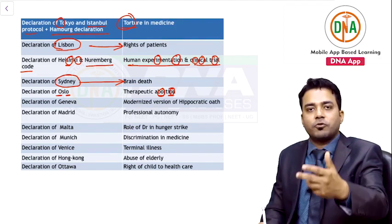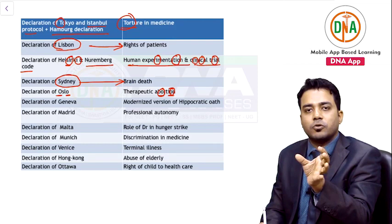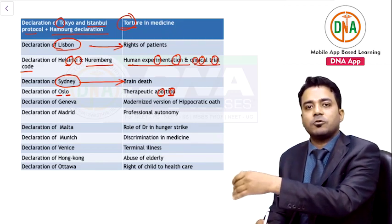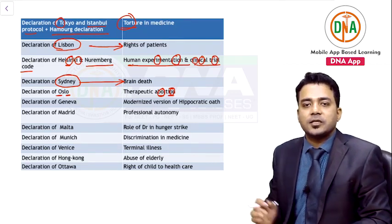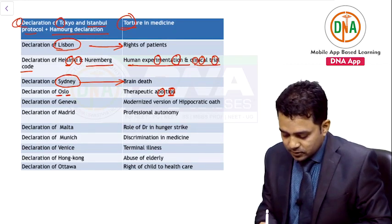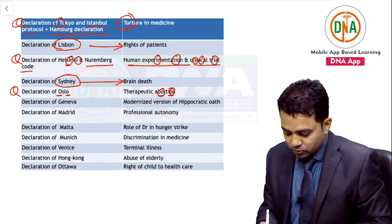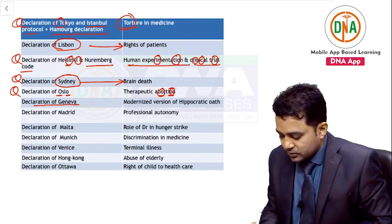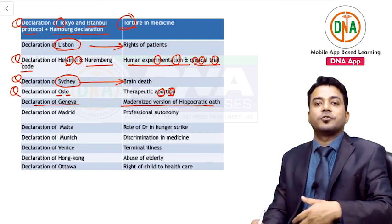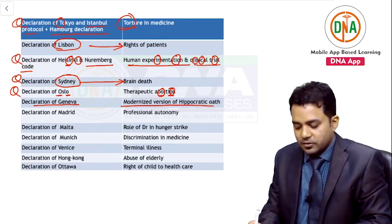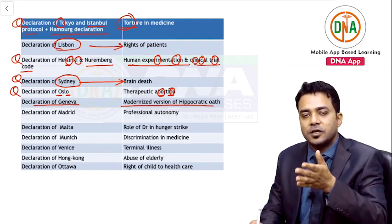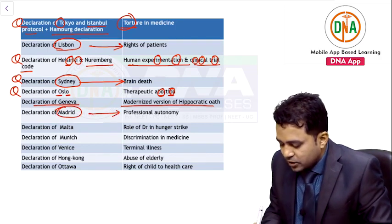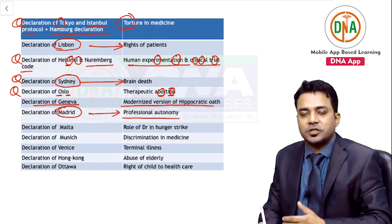To summarize: Declaration of Tokyo (T) is related to torture; Oslo (O) is related to abortion; Helsinki (many I's) is related to experimentation and clinical trials. These three are most repeatedly asked. Last year DNB asked about Declaration of Sydney. The Declaration of Geneva deals with the modernized version of the Hippocratic Oath.